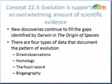This is the last part of the lecture for Chapters 21 and 22, Part 5. In Section 22.3, the summary really comes down to the four types of data that document the pattern of evolution, and you need to know these: direct observations, homology, the fossil record, and biogeography.